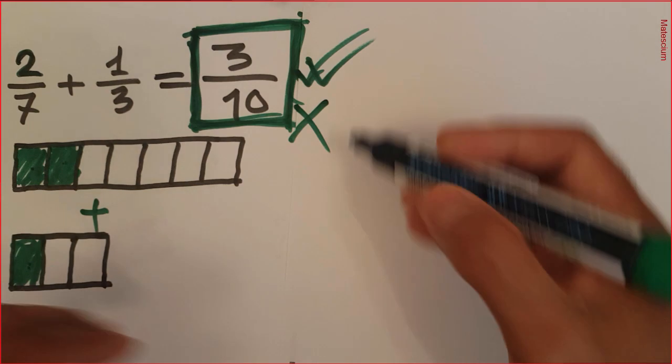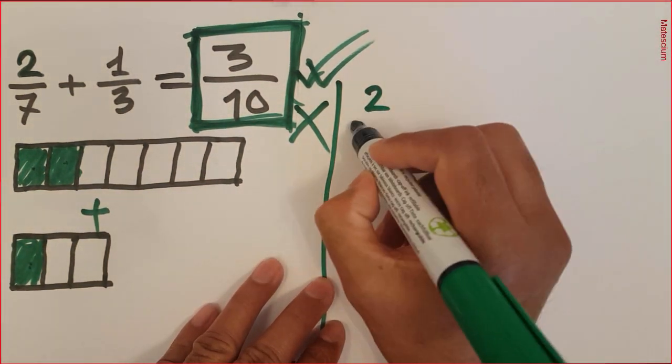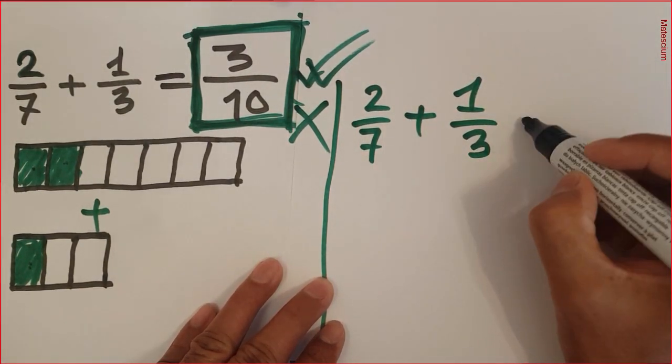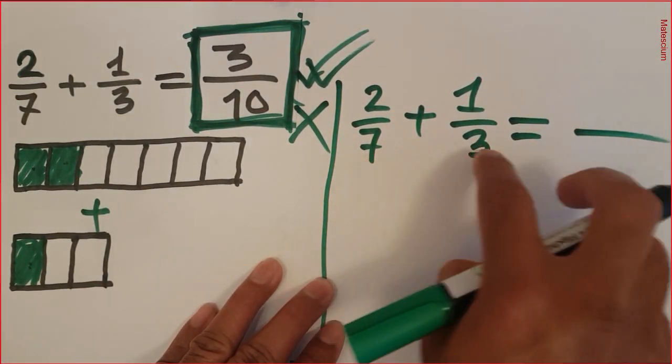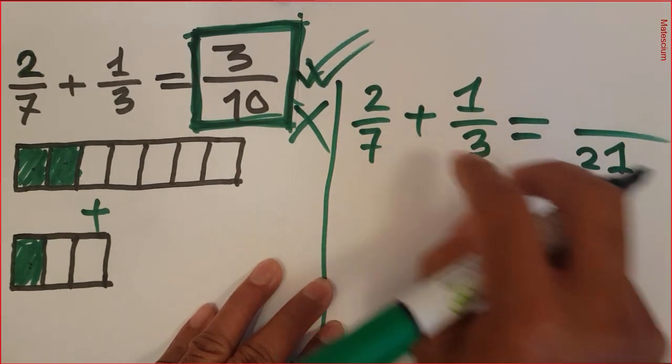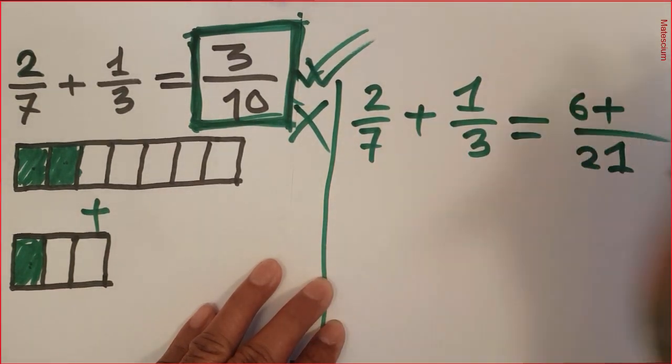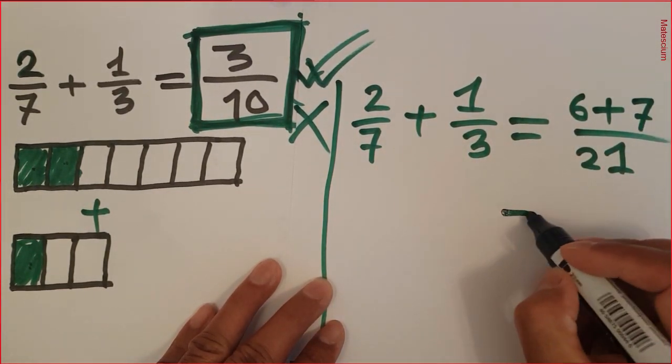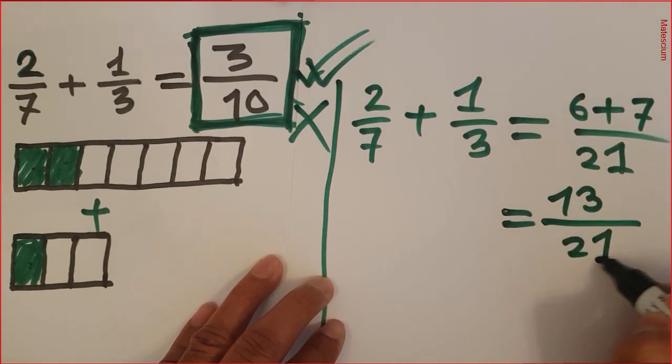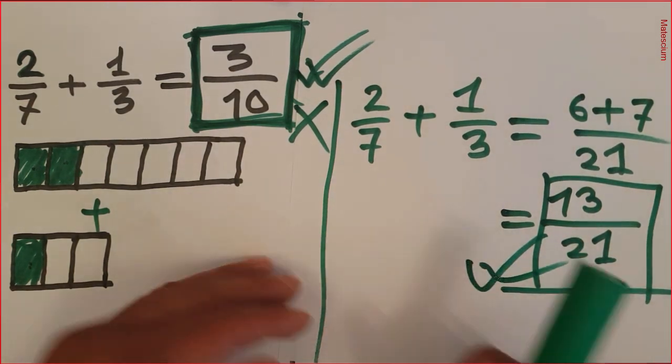What is the correct answer? Correct answer is pretty simple. Let's do according to the conventional mathematics. 2 over 7 plus 1 over 3. So 7 times 3 is 21 and 3 times 2 is 6 plus 7 times 1 is 7. So numerator becomes 13 and denominator becomes 21. Yes, this is the correct answer. 13 over 21 is the correct answer.